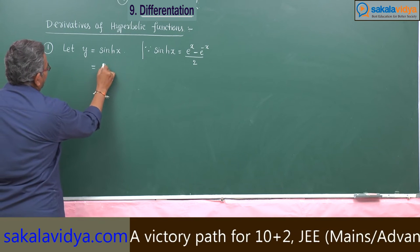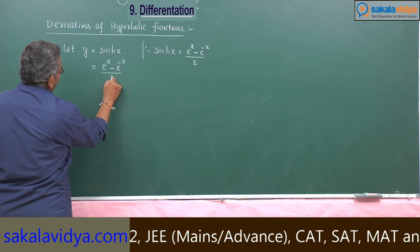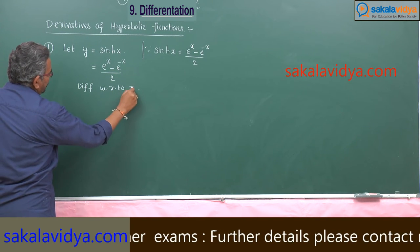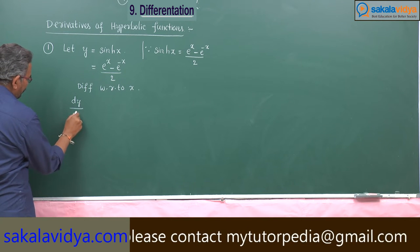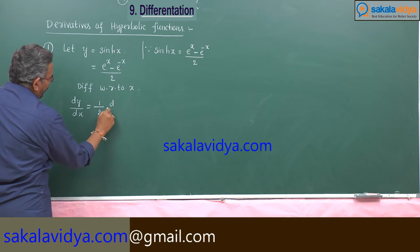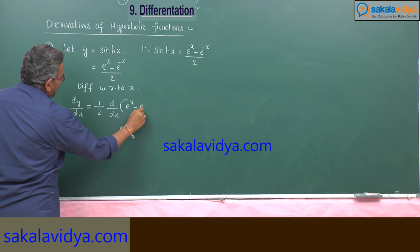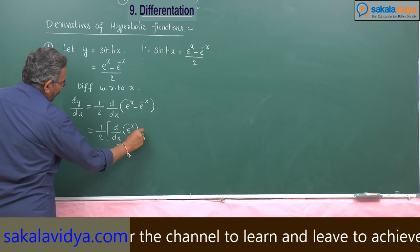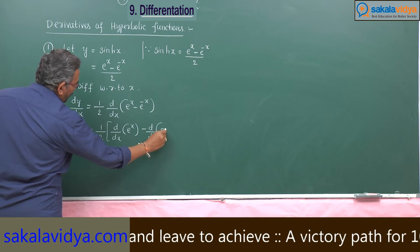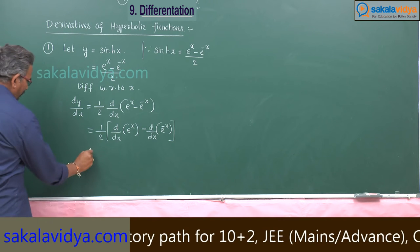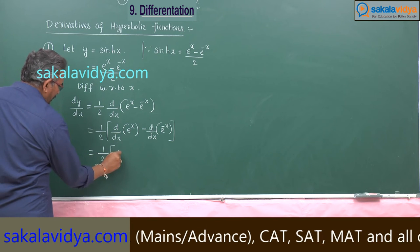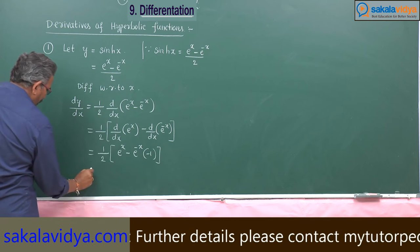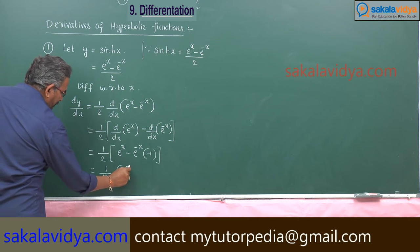So, differentiating with respect to x, dy/dx equals d/dx of (e^x minus e^(-x)) divided by 2. Taking 1/2 as a constant, we get 1/2 times [d/dx of e^x minus d/dx of e^(-x)]. The derivative of e^x is e^x, and the derivative of e^(-x) is e^(-x) times (-1). So this gives 1/2 times (e^x plus e^(-x)).